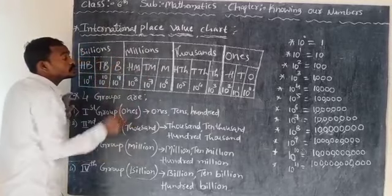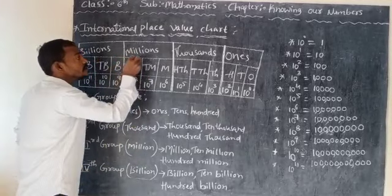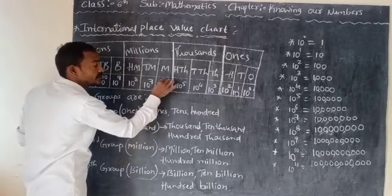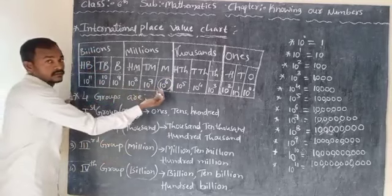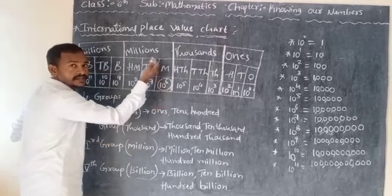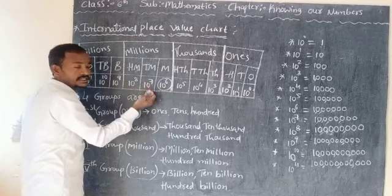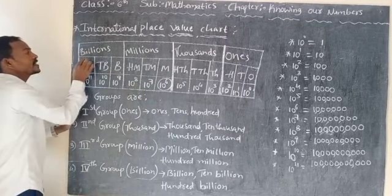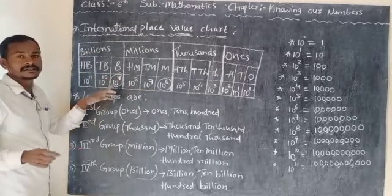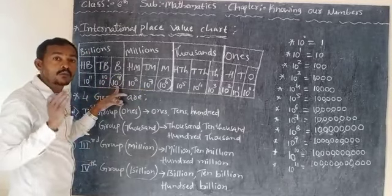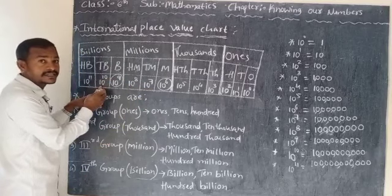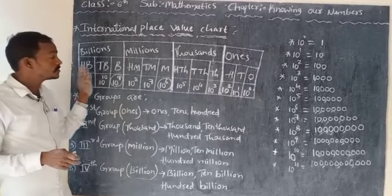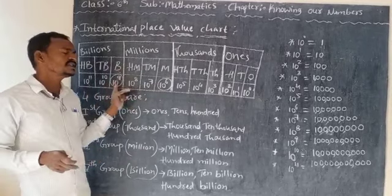You have to remember these 2 groups especially. The million group starts from 10 raise to 6, which is 1,000,000. Then 10 raise to 7 is 10,000,000, and 10 raise to 8 is 100,000,000. The billion group starts from 10 raise to 9, which is 1,000,000,000. Then 10 raise to 10 is 10,000,000,000, and 10 raise to 11 is 100,000,000,000.